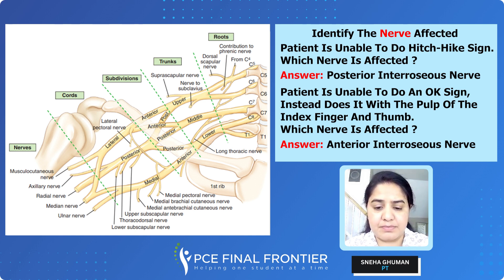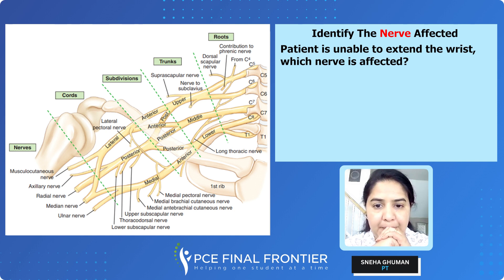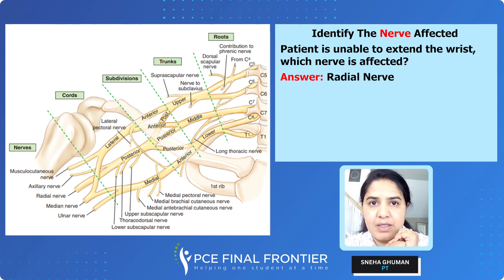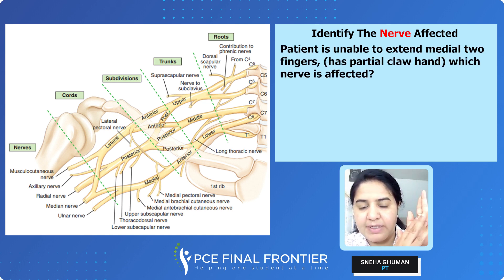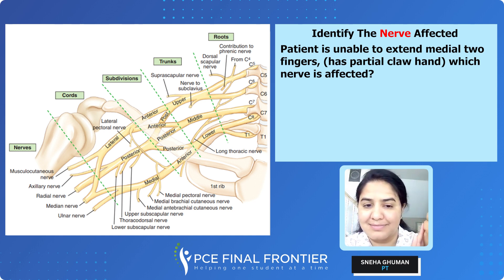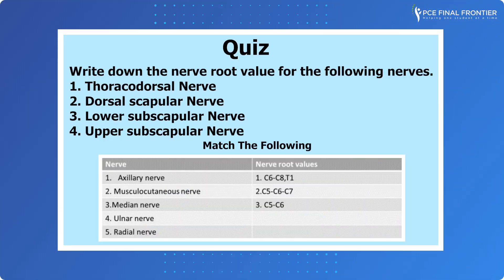A patient has difficulty extending the wrist — a wrist drop. That is the radial nerve. A patient has a partial claw hand with difficulty extending the medial two fingers — that is the ulnar nerve. There is a quiz for you to solve. I encourage all of you to write down your answers in the comment box, and if you still have any difficulty, please email us. Thank you.